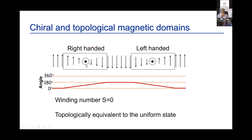When you add domain walls together, the topology of the magnetic domain starts to appear. If you take a right-handed domain wall and a left-handed domain wall and put them together, following the spin angle as you move across from left to right, it goes 180 degrees and then, because of opposite chirality, winds back down to zero. This gives a winding number or topological charge of zero, because you get no net phase traversing the object.